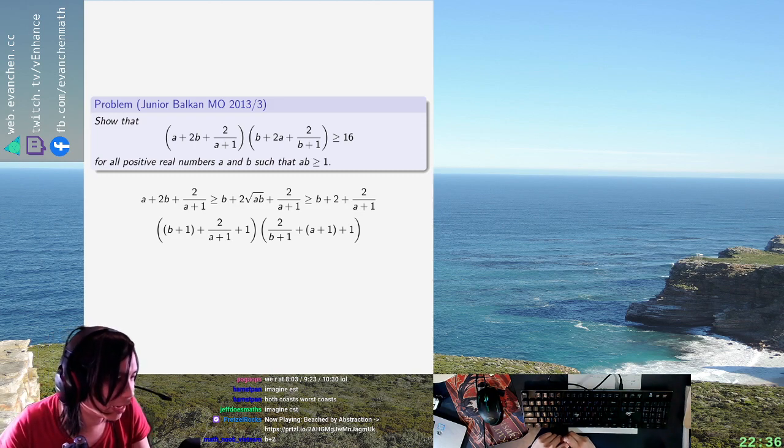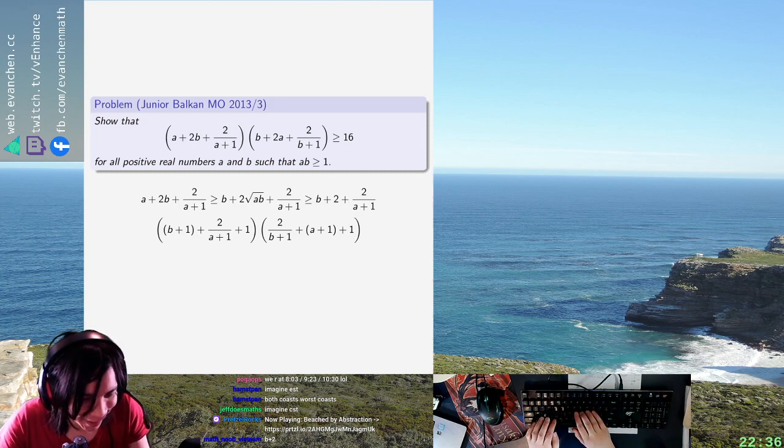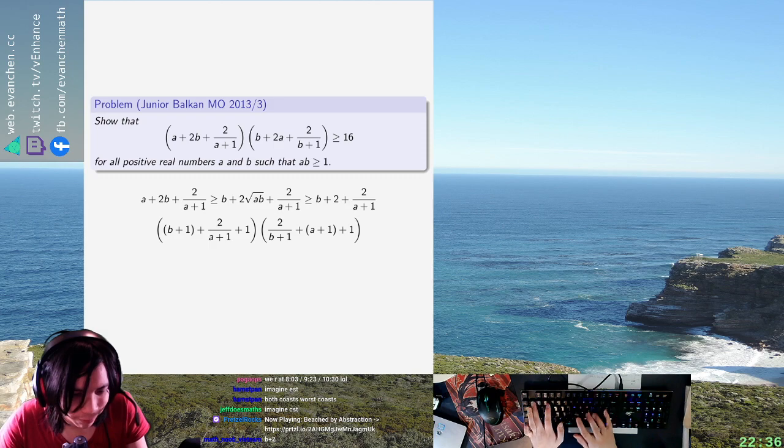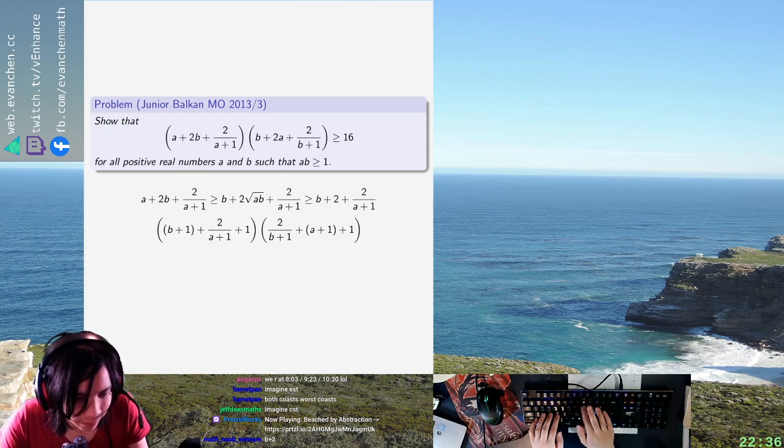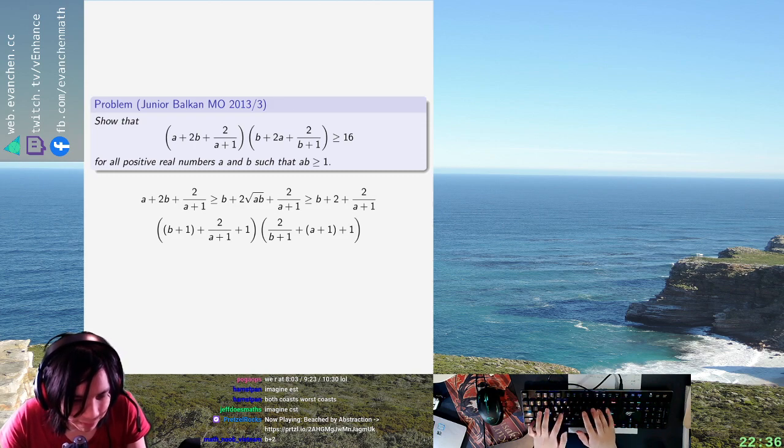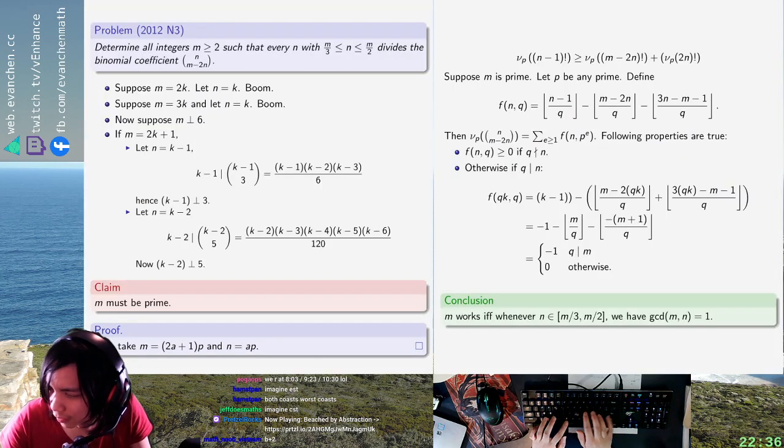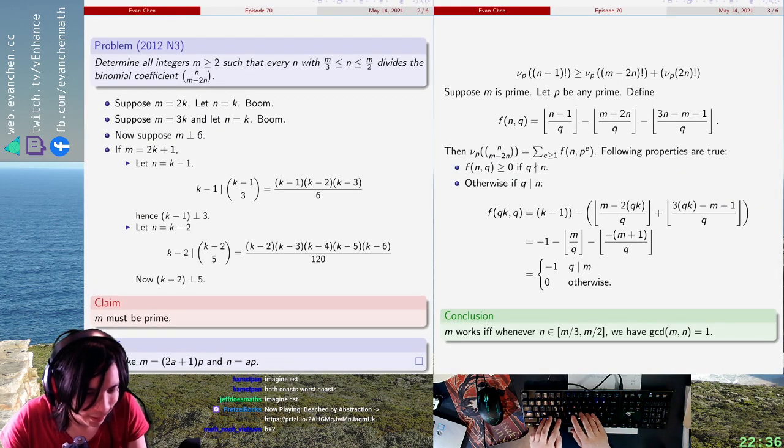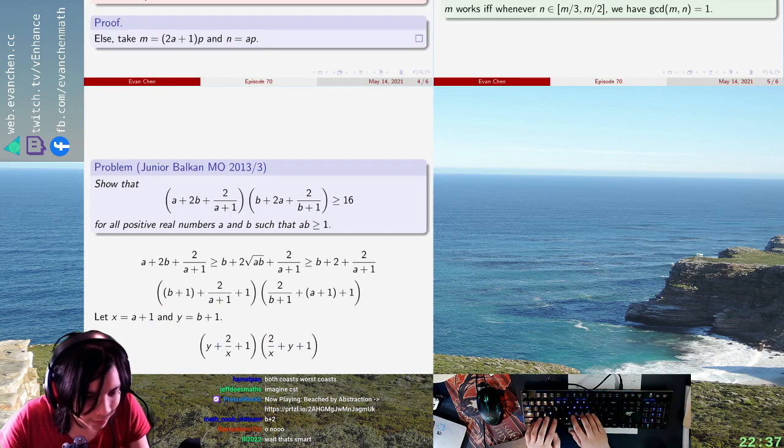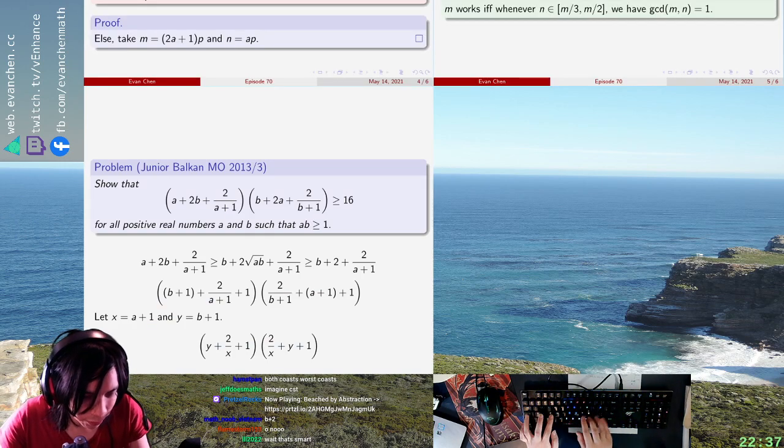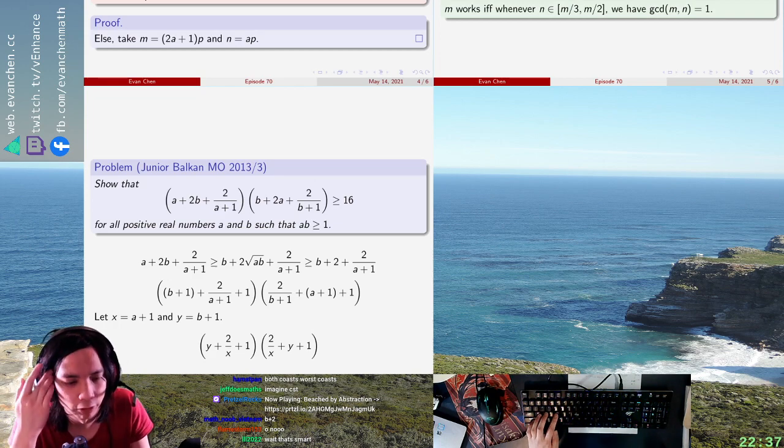What if I just expand? When x equals A plus 1 and y equals B plus 1, then what I want is y plus 2 over x plus 1 times 2 over x plus y plus 1 to be greater than 16. And that should be okay, right? This is what? Yeah, because you'll get a bunch of symmetric stuff, and then AMGM should just wipe everything out.